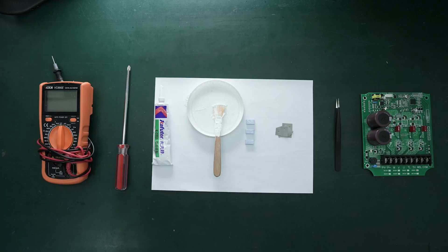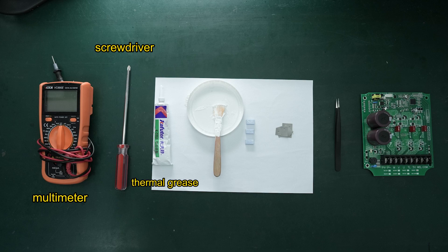How to replace the main board. First, prepare the necessary tools: multimeter, screwdriver, thermal grease, brush, thermal pad, insulation sheet, tweezers, and a new main board.